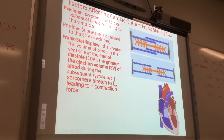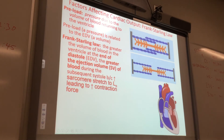This is the Frank-Starling Law of the Heart. The greater the volume of blood in the ventricle at the end of diastole, the greater the stroke volume you're going to get during systole.